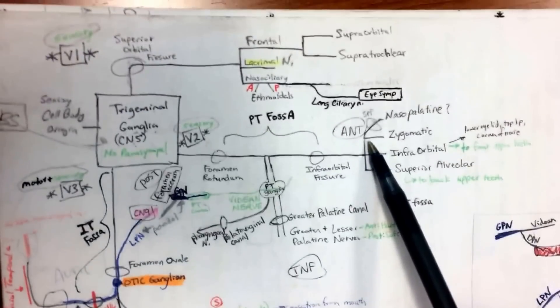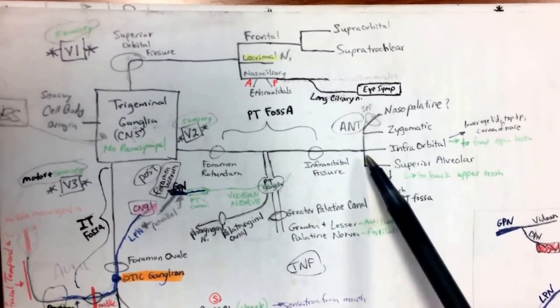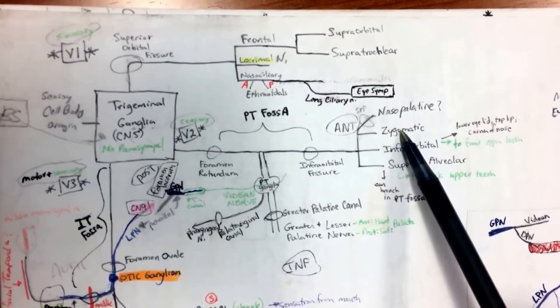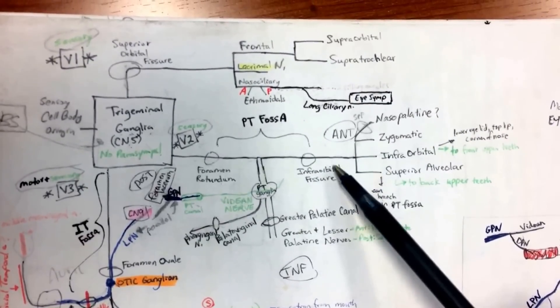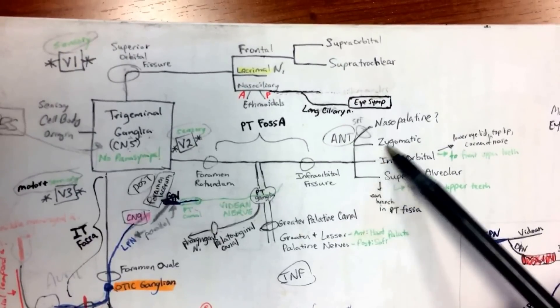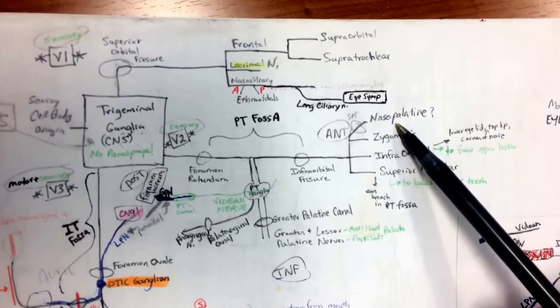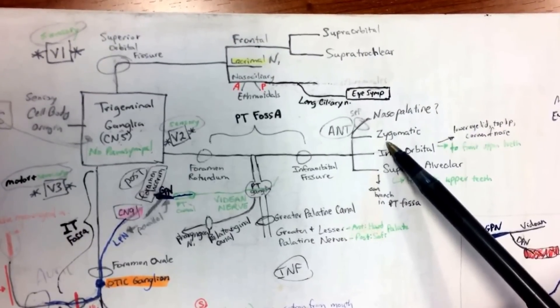And if you move anteriorly, one of the things if you go look at your chicken bucket is you have infraorbital nerve and you have zygomatic nerve. Those are going anteriorly. And they come out of the infraorbital fissure. So we already took care of that. And then one thing that I added here, it may not be exactly anatomically accurate, but it's good for you to remember the chicken bucket.